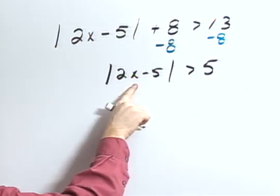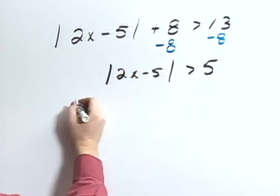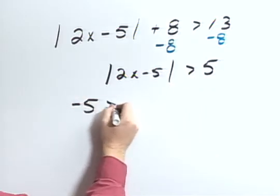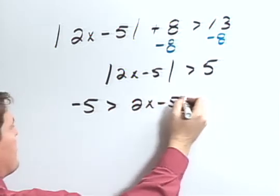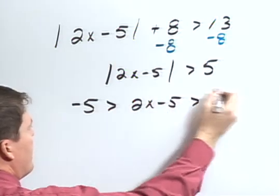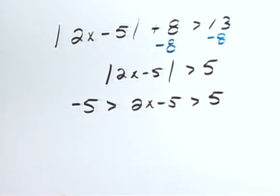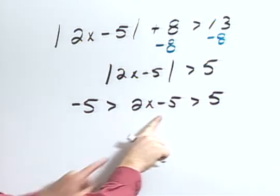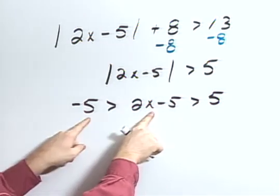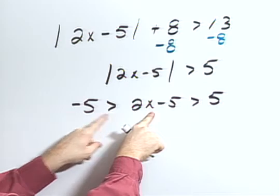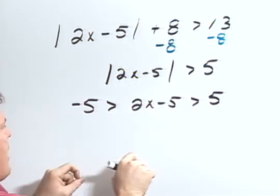Now what I can do next is to split this up so that I would have negative 5 is greater than 2x minus 5, which is greater than positive 5. But let's take a look. Can I have a number, some x here, that would be less than negative 5 and greater than 5?